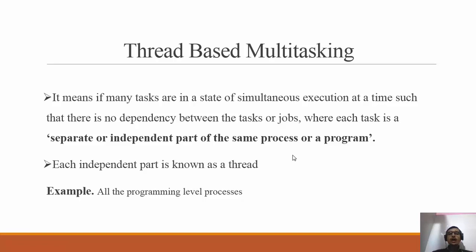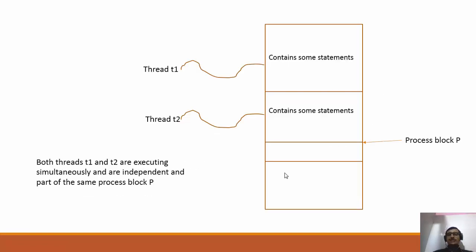Each independent part — that sub-process — is known as a thread. A thread is a part that belongs to a process. There can be N number of threads in a single process, all executing simultaneously without affecting each other, running concurrently.